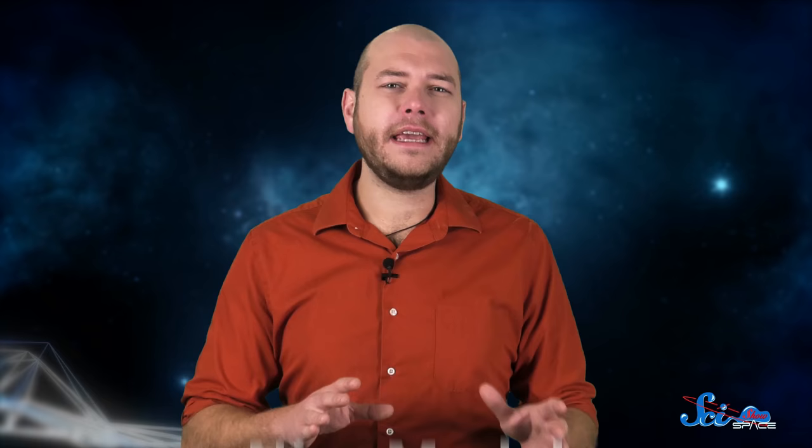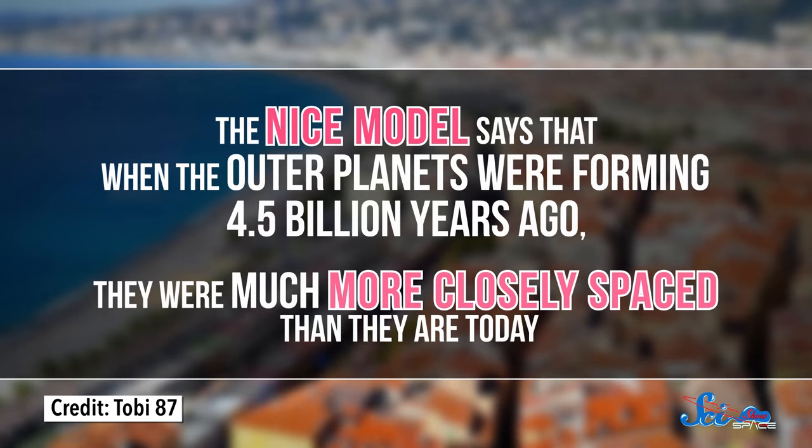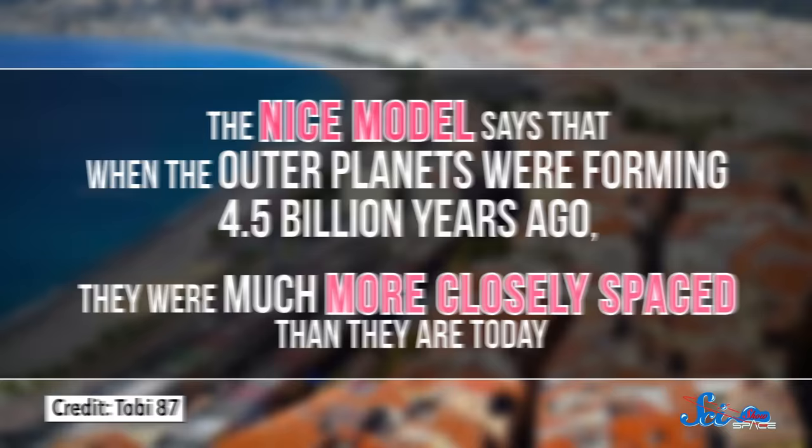Even the planets in our own solar system probably migrated long ago. Astronomers call this idea the Nice Model, after the city in France where it was developed. The Nice Model says that when the outer planets were forming four and a half billion years ago, they were much more closely spaced than they are today. Over time, interactions with the disk drove them to where they are now, but they might have made some major detours along the way.